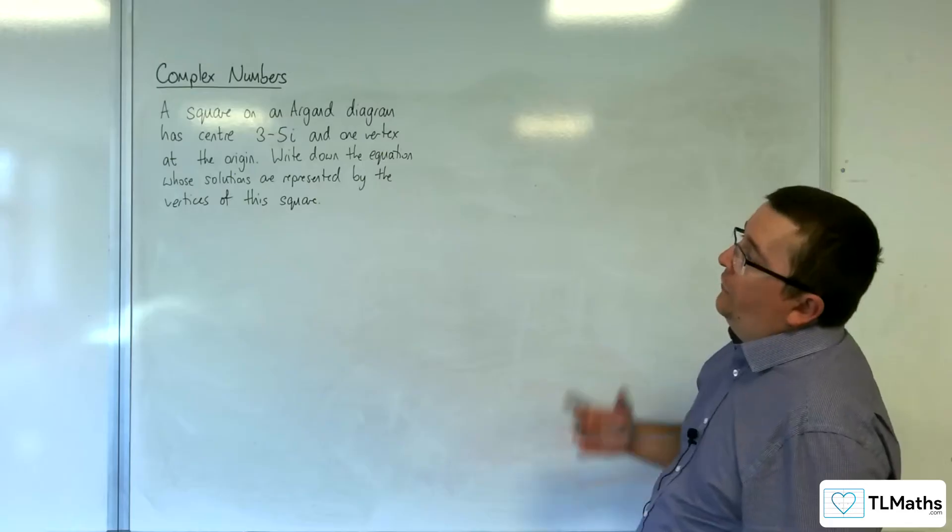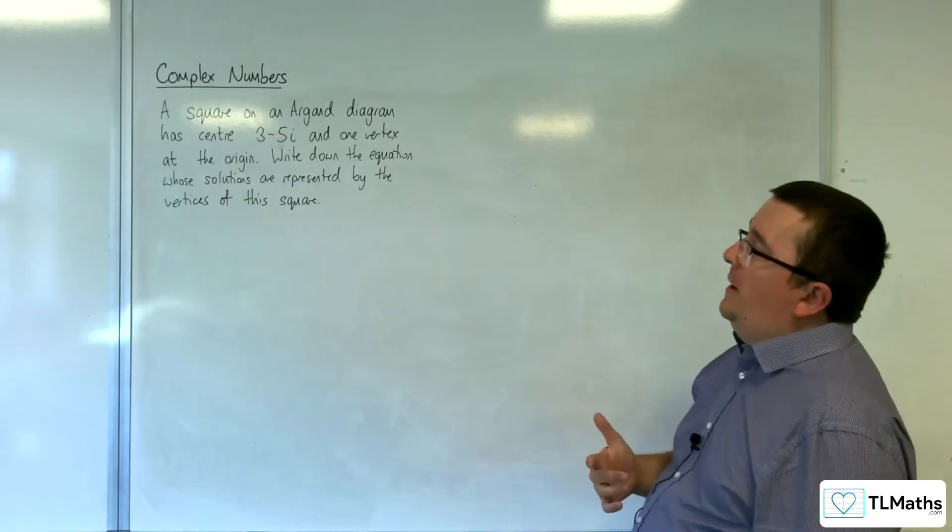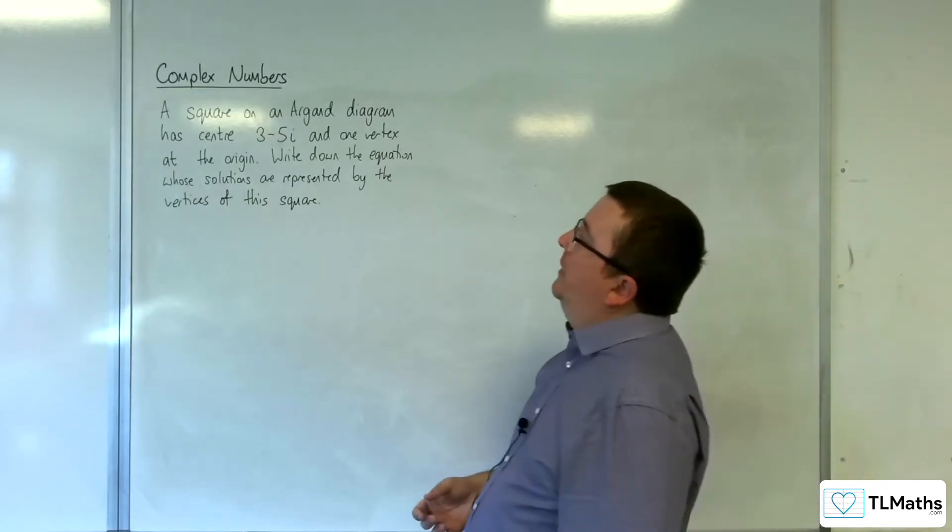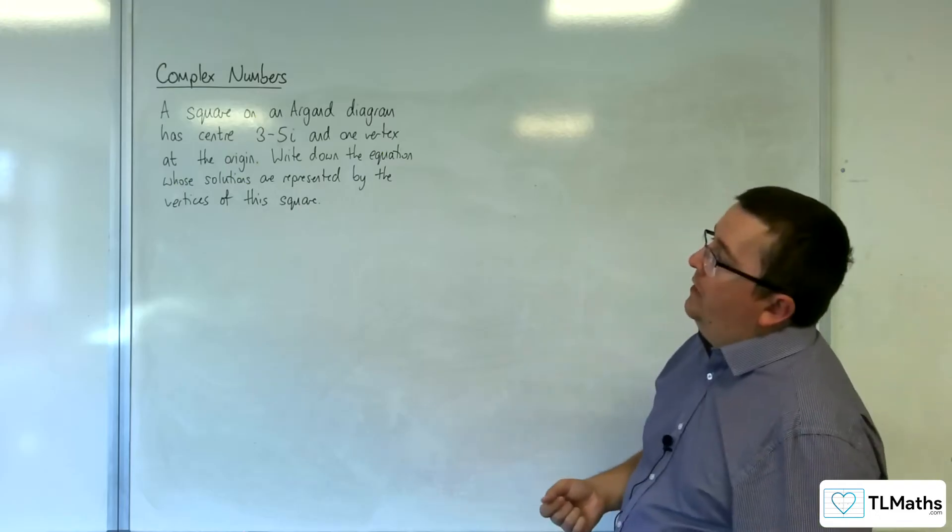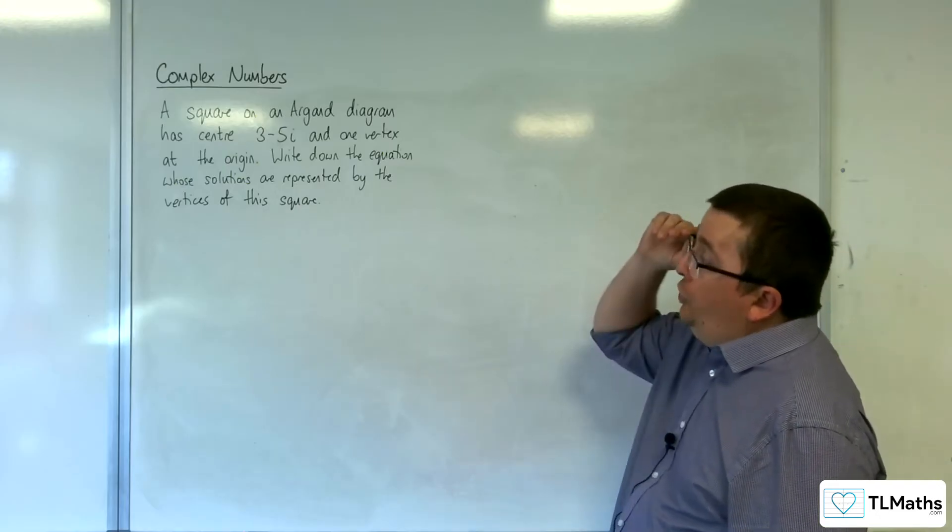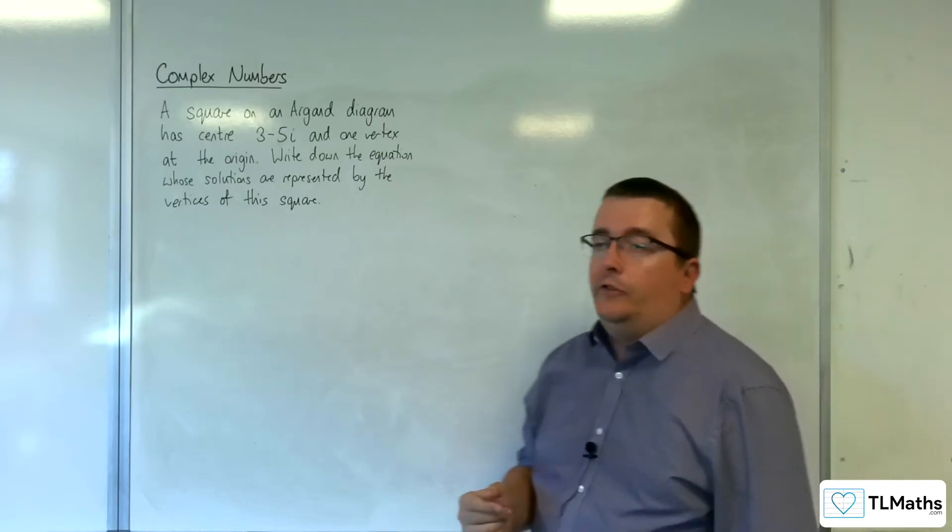In this problem, we have a square on an Argand diagram has center 3 - 5i, and one vertex is at the origin. Write down the equation whose solutions are represented by the vertices of this square.